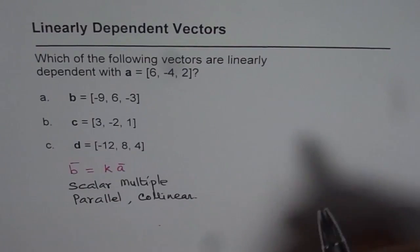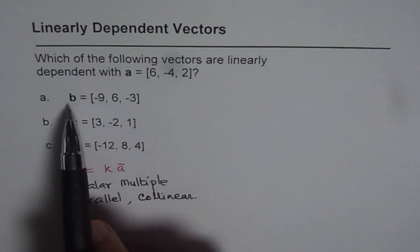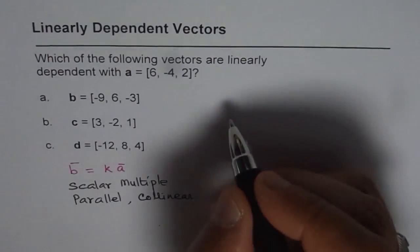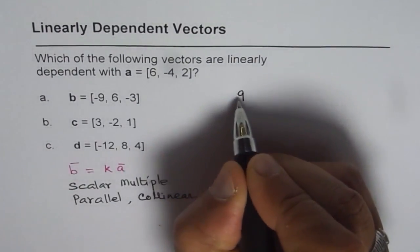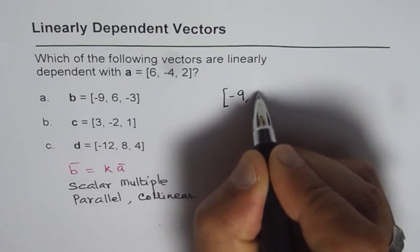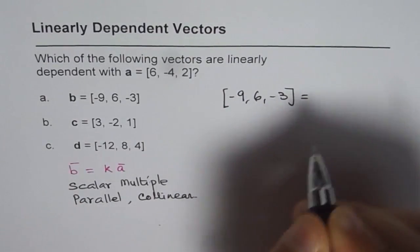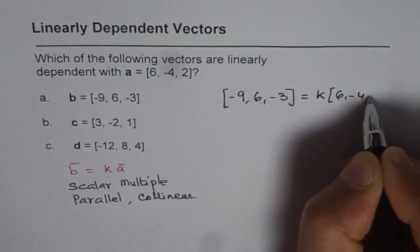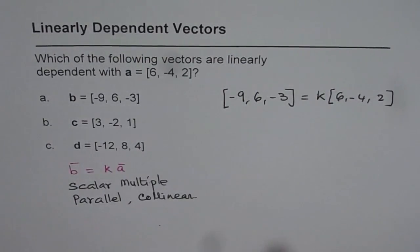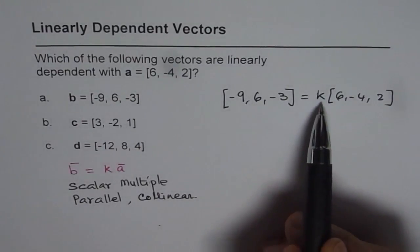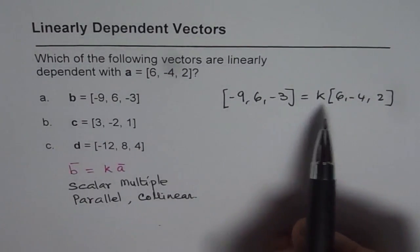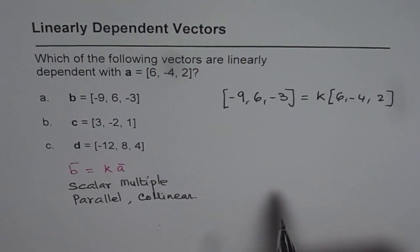So what we have is, let us try to prove whether B is a linearly dependent vector or not with respect to A. So as I said, we will say B vector, which is -9, 6, -3, equals K times 6, -4, 2. So if we find a value of K which can satisfy this relation, then they are linearly dependent, otherwise they are not, right?